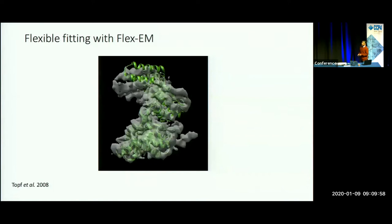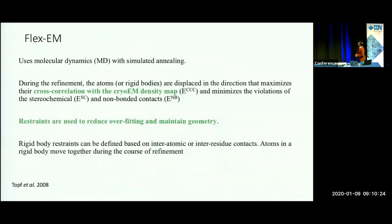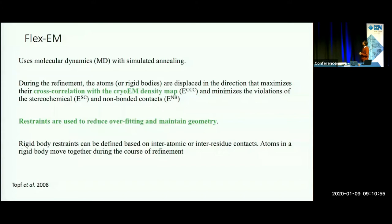FlexiM is a method for flexible fitting of models. We need a starting model, which can be a homology model or a crystal structure representing a different conformation state — often a different biological form. You're trying to fit it into a map that represents a different conformation or biological state. FlexiM uses molecular dynamics simulations with a cross-correlation-with-density-map term added to the energy calculations. The idea is to displace atoms to decrease the overall energy of the system, with movement guided by the density gradient as well.